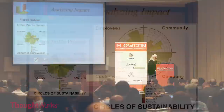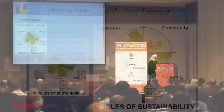I ran into this approach by the United Nations: take a city and decide how good it is. They do economics, ecology, politics, and culture, and then they have seven measurements in each, and you get a grade ranging from really vibrant to red. I think this one happens to be Melbourne.